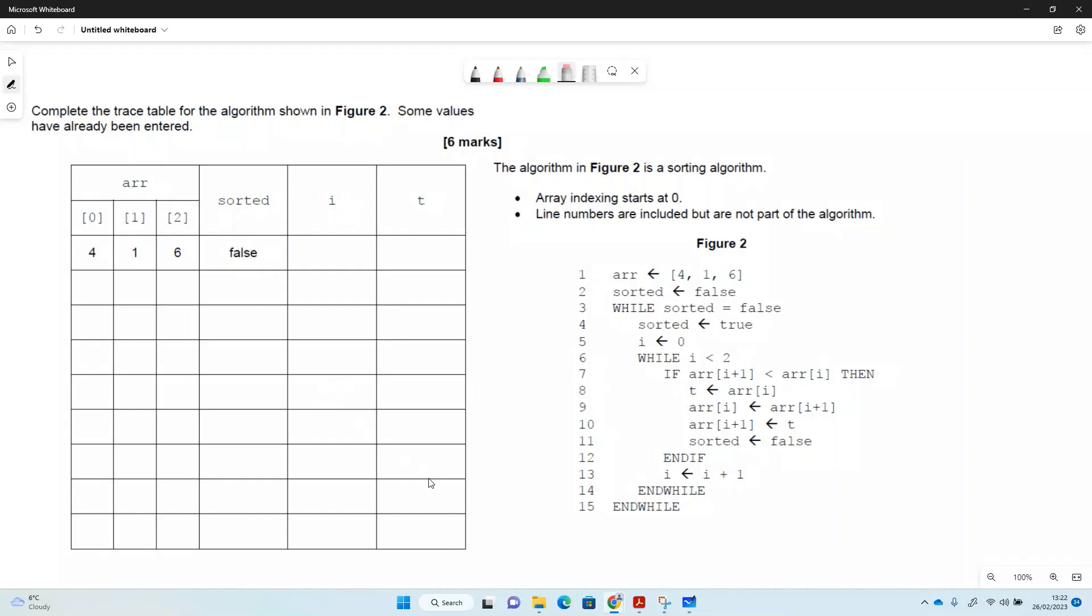This question is a slightly tricky trace table. They've told us this is a sorting algorithm and that array indexing starts at zero, which is our normal convention. They've already put in for us that array[0] is 4, array[1] is 1, and array[2] is 6, so that first line is sorted out for us. The second line has already been put in, so we can start at line 3.